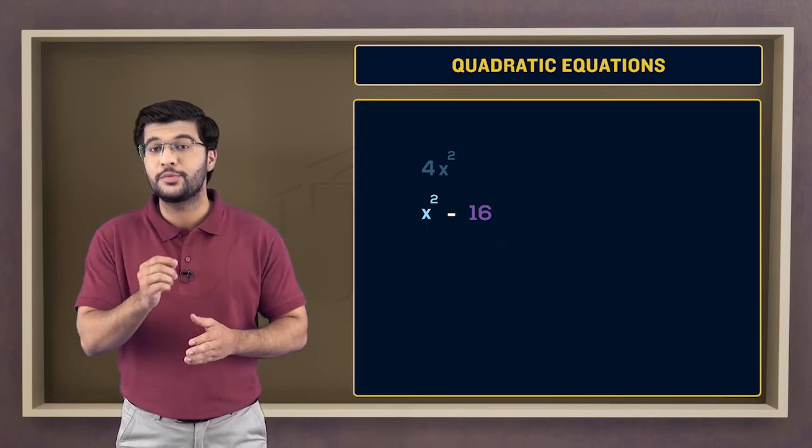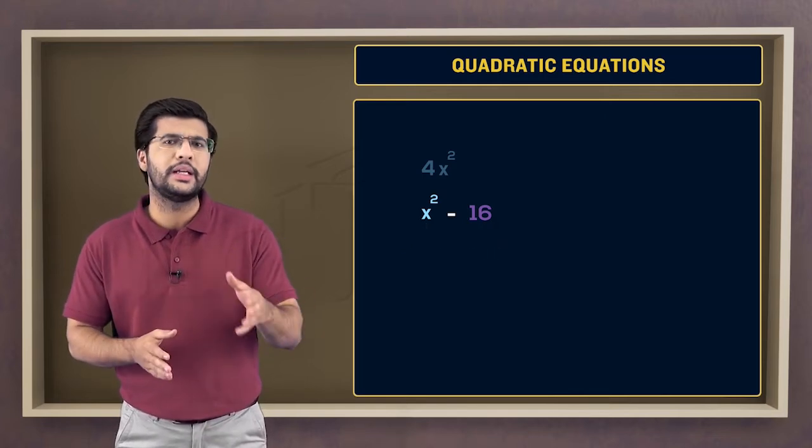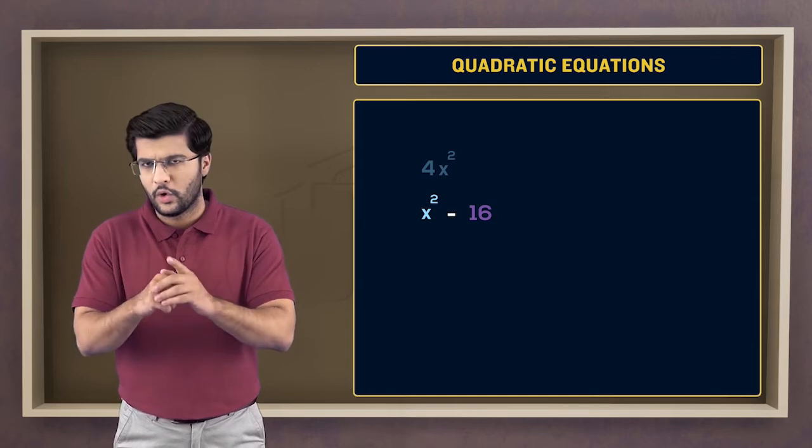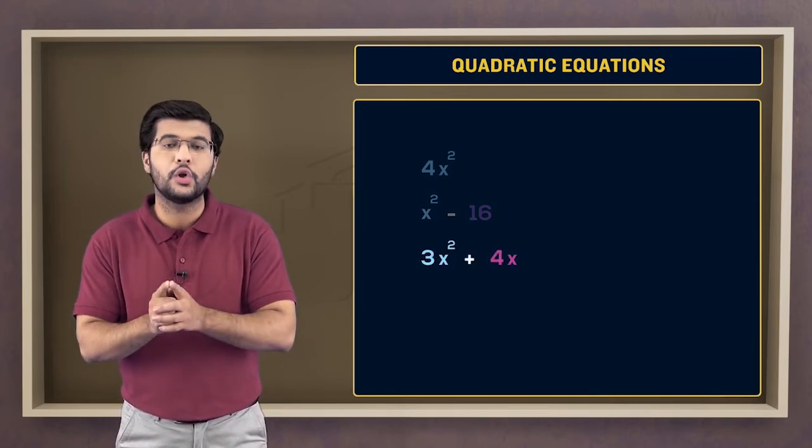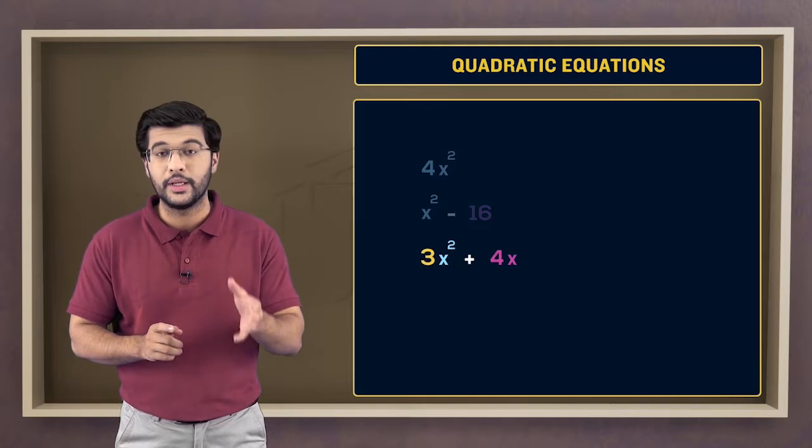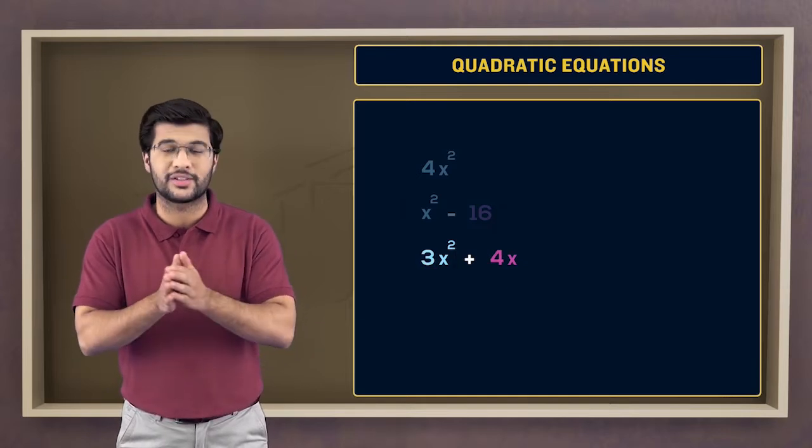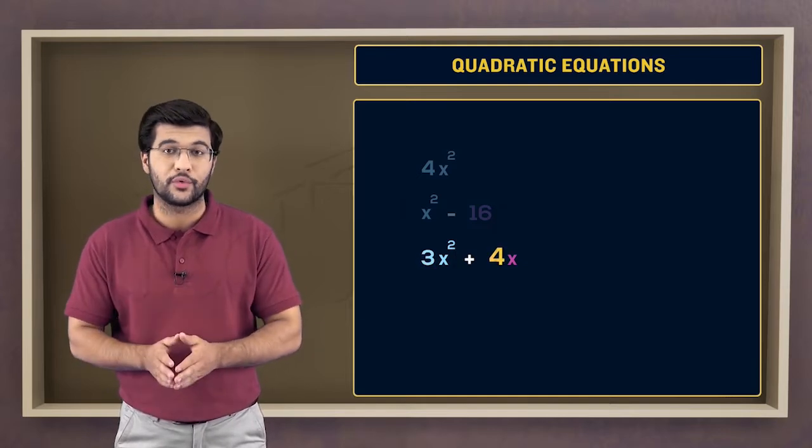Naturally, you must be expecting an expression with three terms next. Hold on, look at this expression first. This one also has two terms, where 3 is the coefficient of x squared while 4 is the coefficient of x.